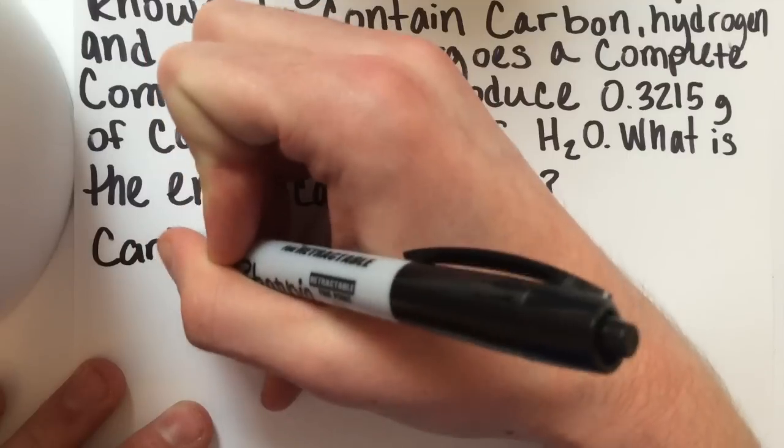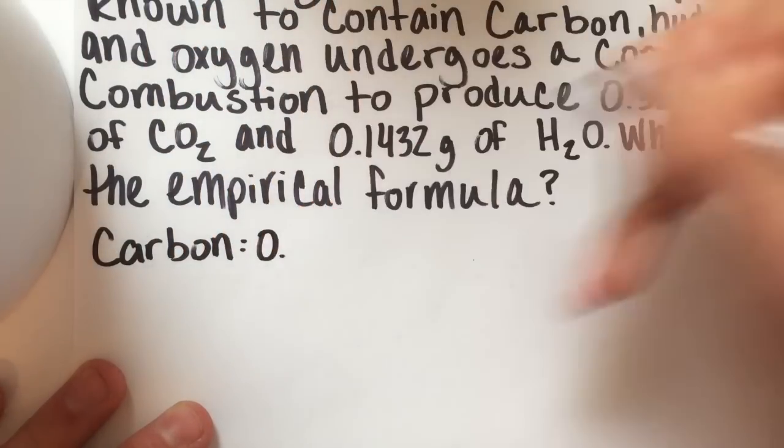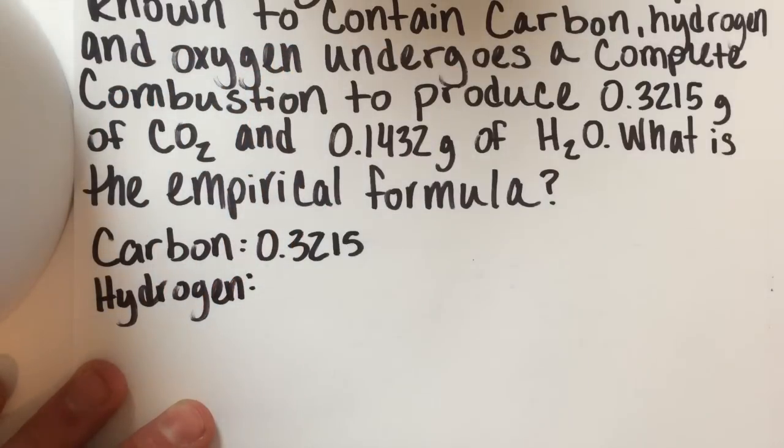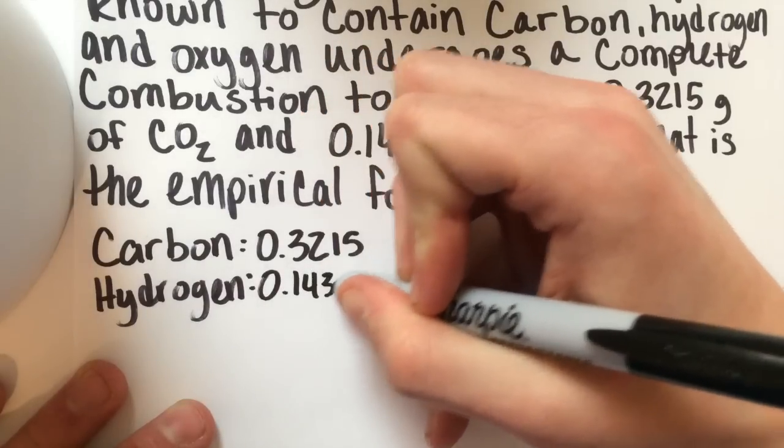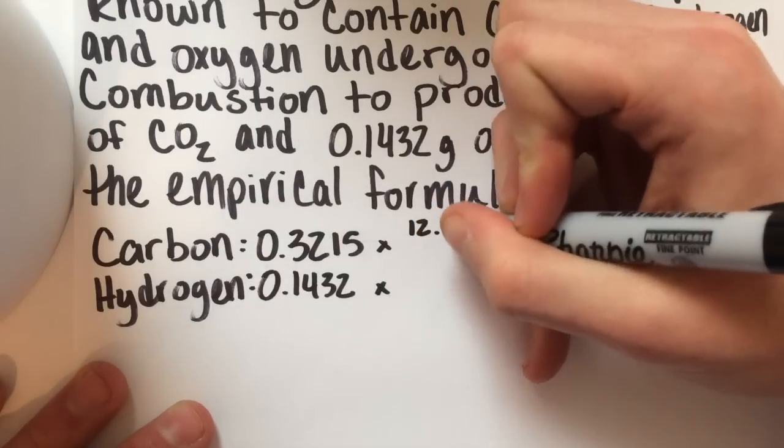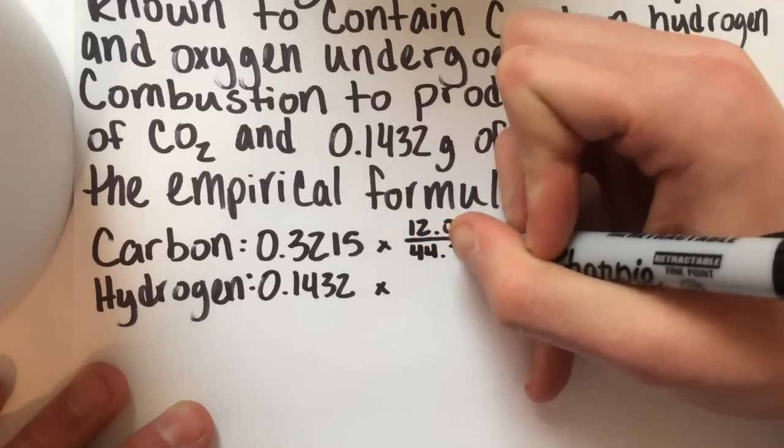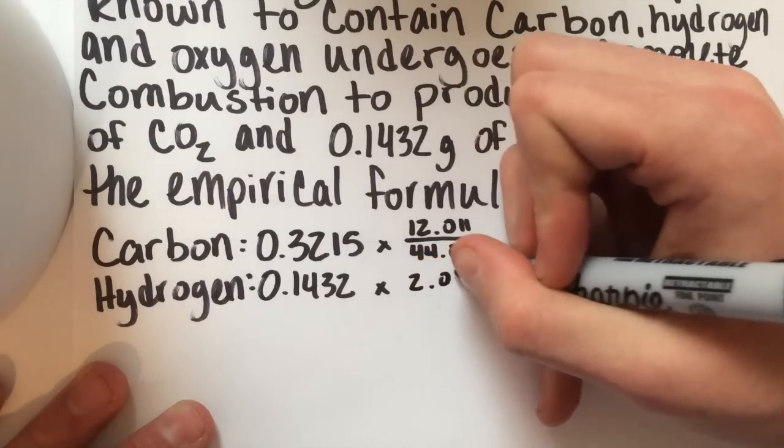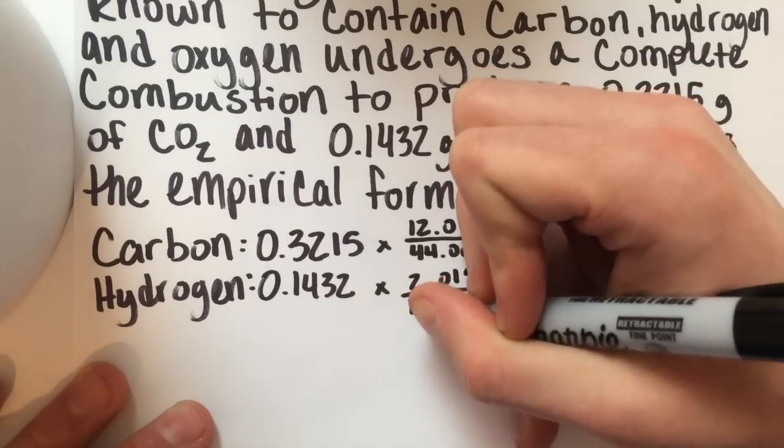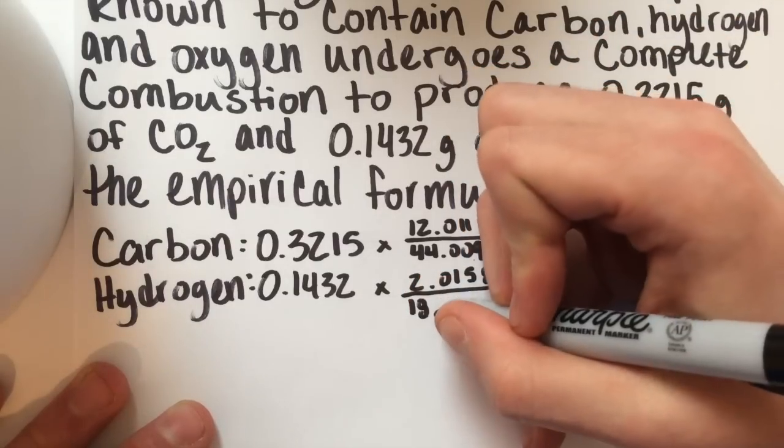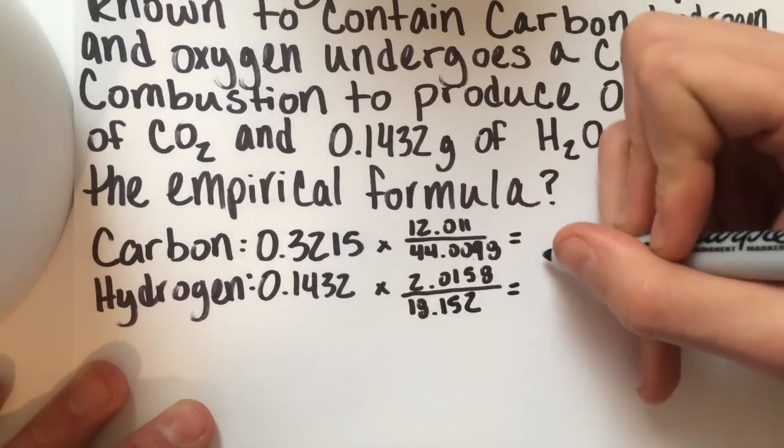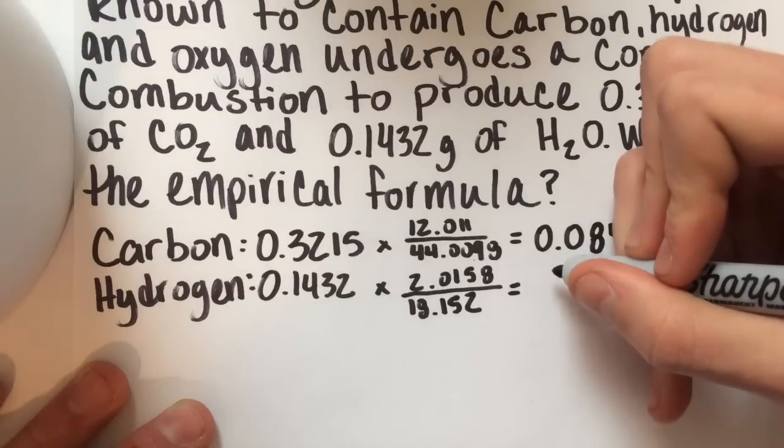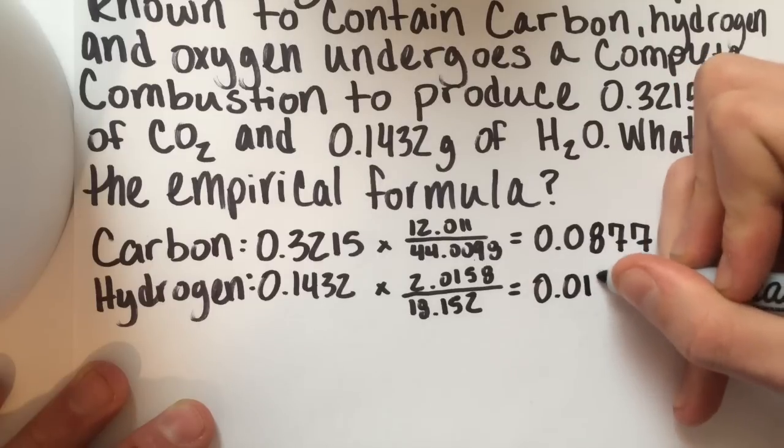For carbon we have 0.3215 times 12.011 over 44.0098. For hydrogen we have 0.1432 times 2.0158 over 18.0152. So for these values you get 0.0877 grams for carbon and 0.0160 grams for hydrogen.